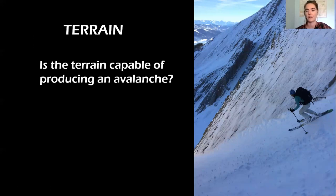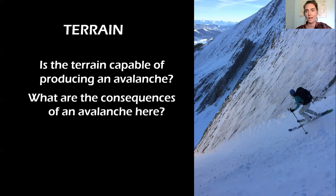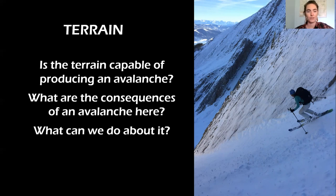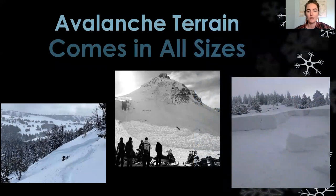Regarding terrain, we're asking ourselves a couple of important questions: Is this terrain capable of producing an avalanche, and how do we know? I think this is a really knowable question — we can find the answer to whether this is avalanche terrain. What would happen if there was an avalanche here? And what are we going to do about it? We hope to give you tools to actually go out and make good choices for yourself. That's the most important thing when we consider our exposure to avalanche terrain — we have a lot of choice in what we're going out there and doing.